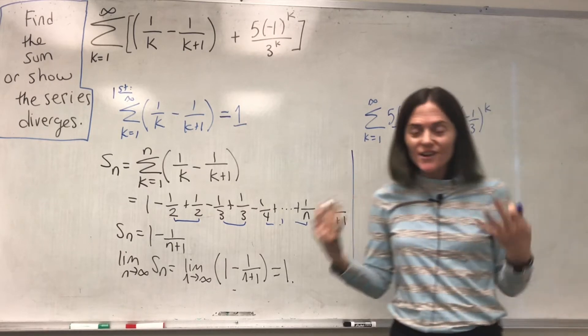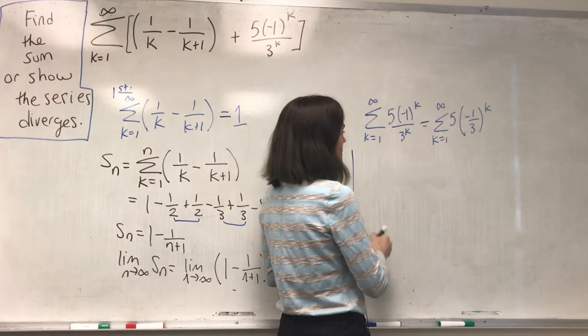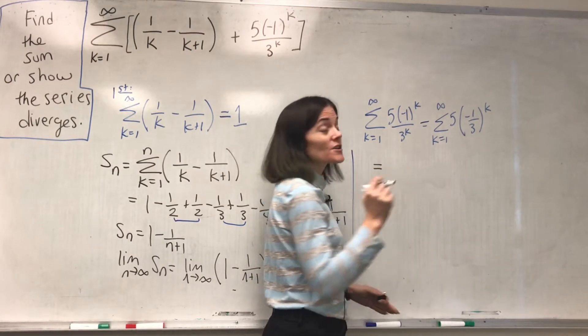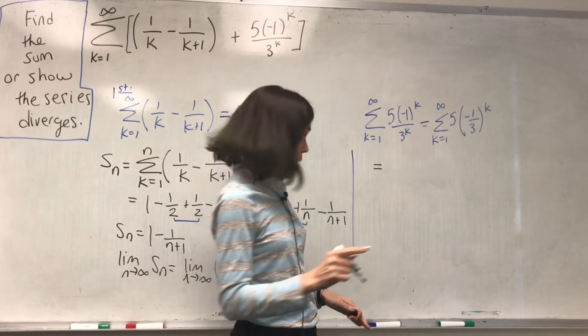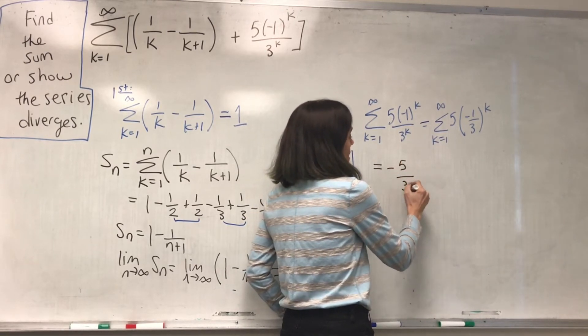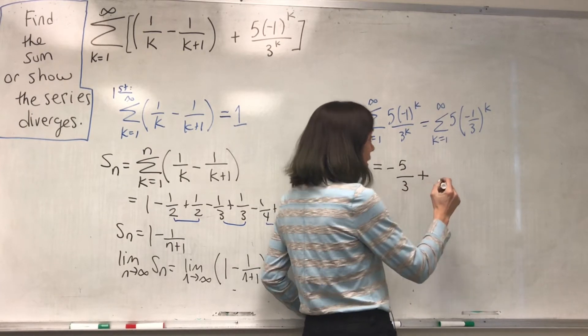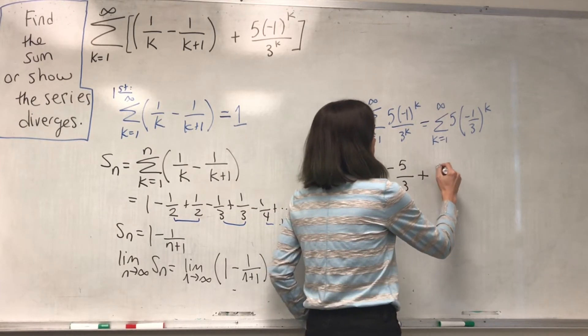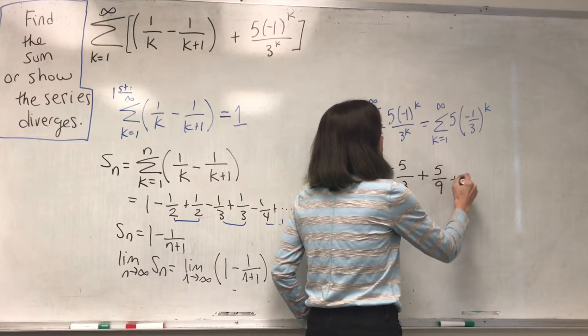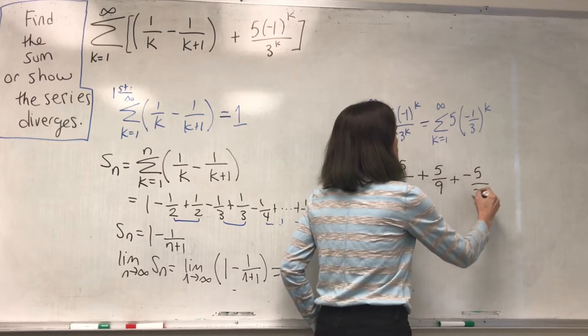Now, we could, and I will. Why not? Let's start writing out some terms. So, my first term here is k equals 1, and I have negative 5 over 3. My second term, k equals 2, I have a positive, it's going to be 5 over 9. Then, my next term is going to be a negative 5 over 27.